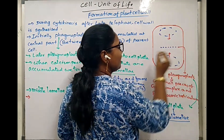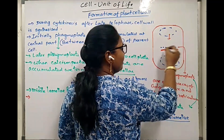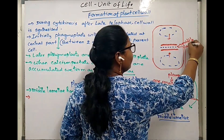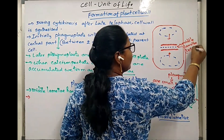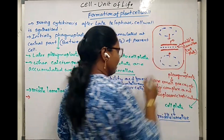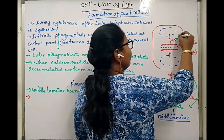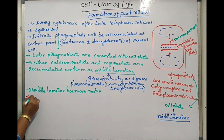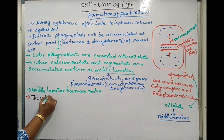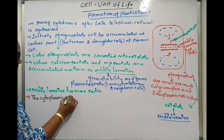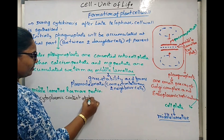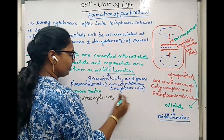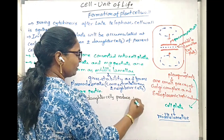The cytoplasmic content from the daughter cells secretes a special layer that is the primary cell wall. This will be the middle lamellae finally. The cytoplasmic content of daughter cells synthesizes or produces the primary cell wall.